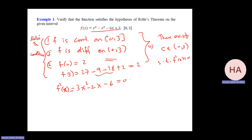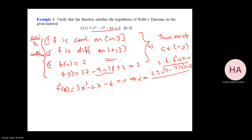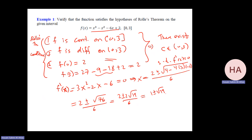Using the quadratic formula: x equals (2 ± √(4 + 72)) / 6, which simplifies to (2 ± √76) / 6. Since 76 equals 4 times 19, this becomes (2 ± 2√19) / 6, or (1 ± √19) / 3.